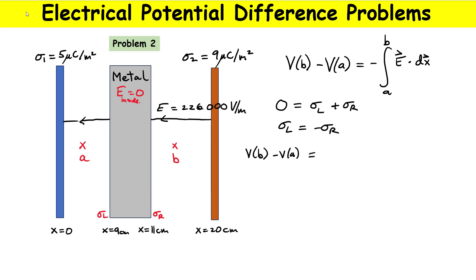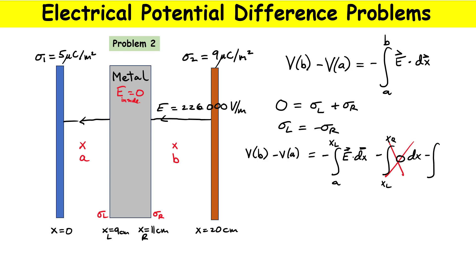We apply the same method: VB minus VA equals minus the integral. We split the integral into three parts. First, from A to XL (the left edge of the metal) — that's the same E dot dx expression as before. Then from XL to XR inside the metal — but the field is zero there, so that term drops out entirely. Finally, from XR (the right edge) all the way to point B. The same cos theta argument applies, and since the field is the same, we get E total times (XL minus xA) plus E total times (xB minus XR).